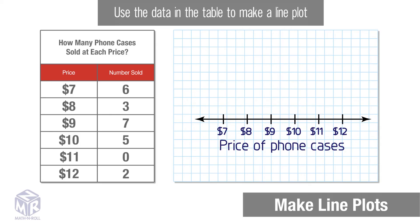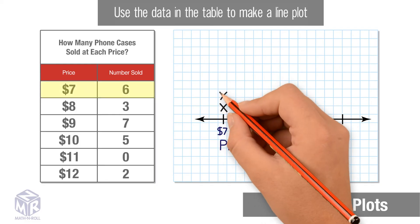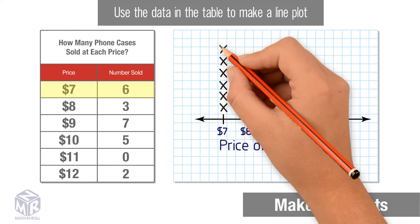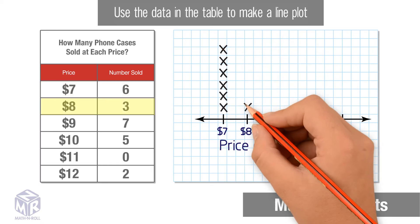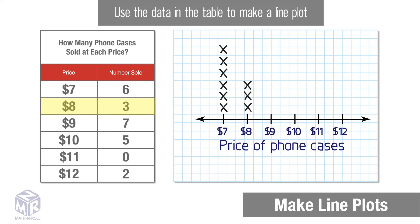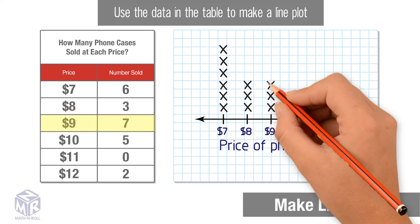Draw x's above the number line to show the numbers of cases sold. Six cases were sold for $7, so we draw six x's. Three cases were sold for $8, so we draw three x's. Seven cases were sold for $9, so we draw seven x's.